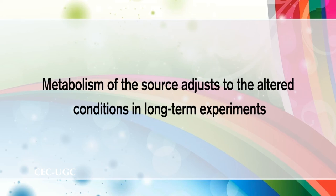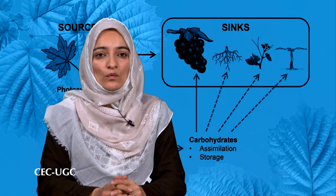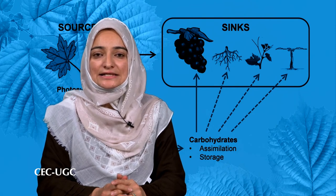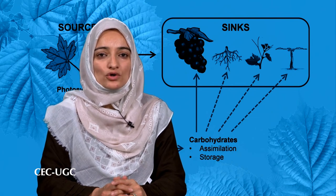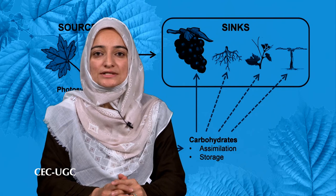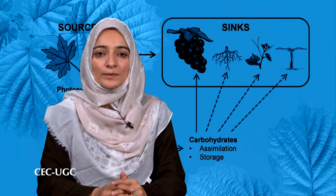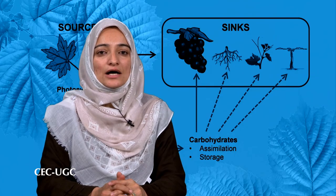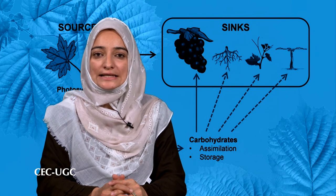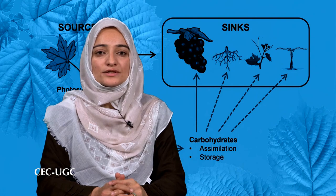In long-term experiments, photosynthetic rate often increases over several days when sink demand increases, and decreases when sink demand decreases. Photosynthesis is most strongly inhibited under conditions of reduced sink demand in plants that normally store starch rather than sucrose during the day. Perhaps an accumulation of photosynthate — starch, sucrose, or hexoses — in the source leaf could account for the linkage between sink demand and photosynthetic rate in starch-storing plants.